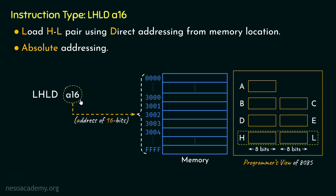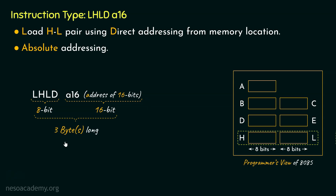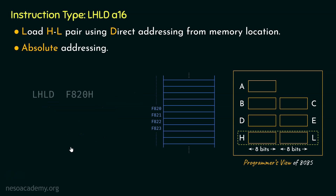Since we are providing the address within the instruction itself, it is called direct addressing or absolute addressing. Size-wise, LHLD occupies 8 bits and A16 occupies 16 bits, so this instruction cumulatively falls under the category of 3-byte long instructions.